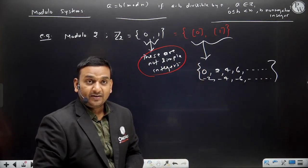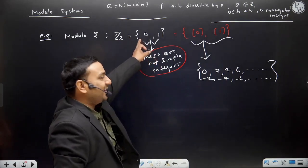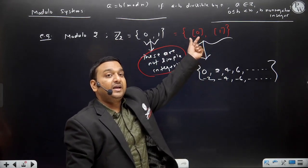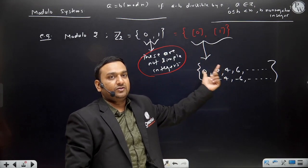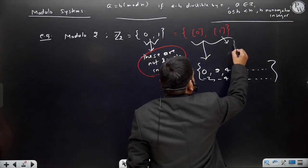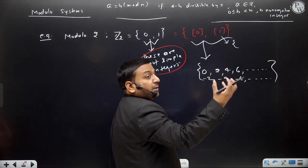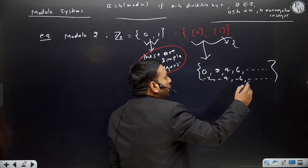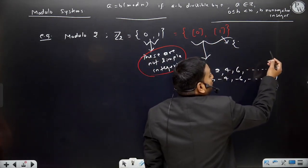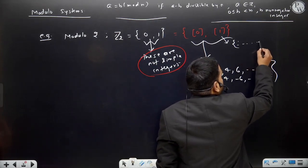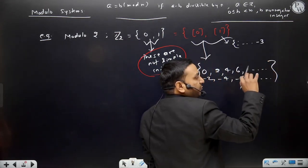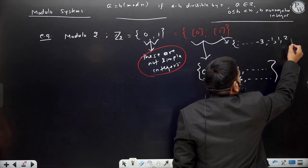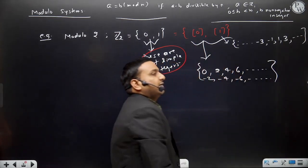Are you getting my point? So this simple 0 you write is not a simple integer - basically that is a 0 class in modulo 2. And here, 1 is not a simple integer - basically it represents an equivalence class: elements which are congruent to 1 in modulo 2. So those elements would be: minus 3, minus 1, 1, 3, and so on.